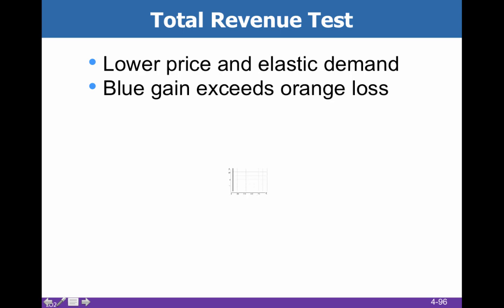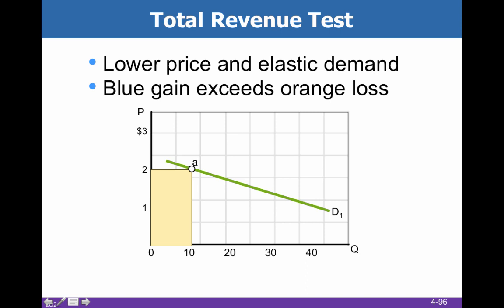Total revenue is always the area under a curve. If you're selling at $2 and you sell 10 units, that gives you an area of $20. Now if we drop the price down to $1, we're going to sell 40 units, giving us a total revenue of $40. The blue square is bigger than the yellow square, which means total revenue went up when we lowered the price — that's true when we have elastic demand.